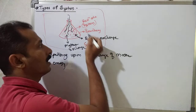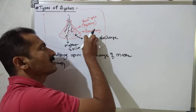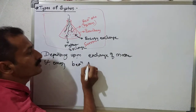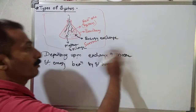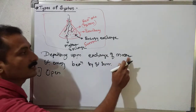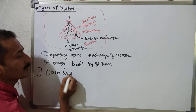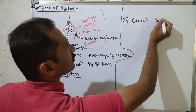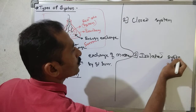So depending upon the exchange of matter and energy between system and surrounding, there are three types of system. The first one is the open system, the second one is the closed system, and the third one is the isolated system.